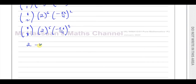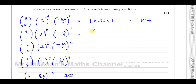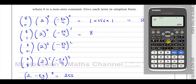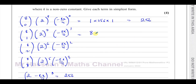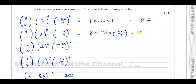So (2 minus kx/4) to the power of 8 equals 256. The next term: 8C1 is 8, and 2 to the power of 7 is 128. Times (minus kx over 4) to the power of 1 is minus kx over 4. So we get 8 times 128 divided by 4, which gives minus 256kx.